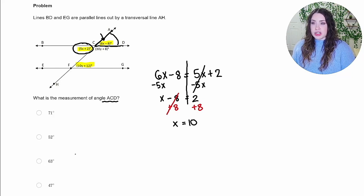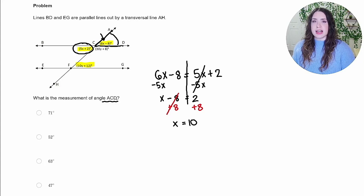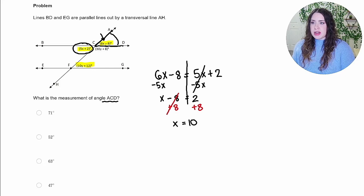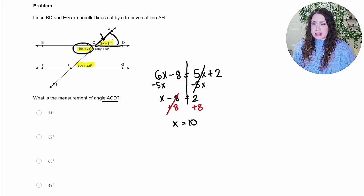Now, luckily that's not even an option, but always make sure with geometry you're looking for what they're actually asking because a lot of times we have to take our variable that we get and plug it back in. And since we're looking for angle ACD up here, I need to plug it back into 6X minus 8. So we're going to go ahead and do that.